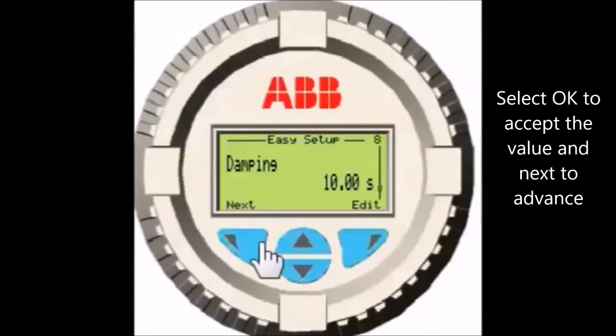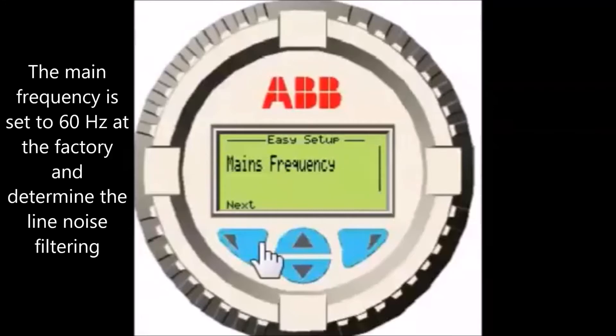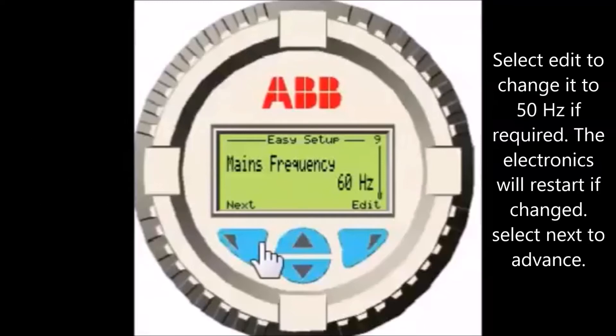Mains frequency is defaulted at the factory for 60 Hz, the US standard. If required, select Edit and select 60 Hz. If your power source is 50 Hz, then select it. This setting determines the line noise filtering. Select OK to accept the value and then select Next to advance.